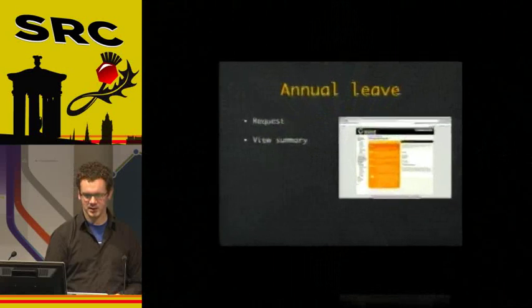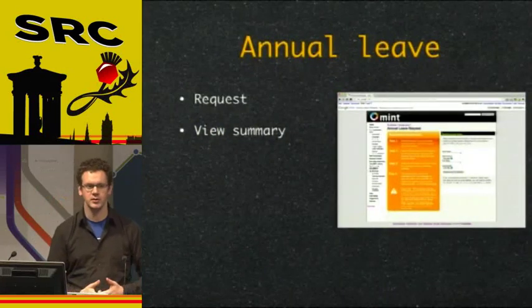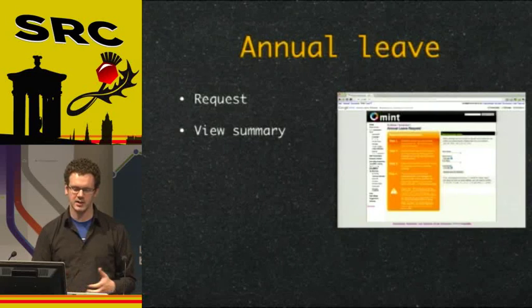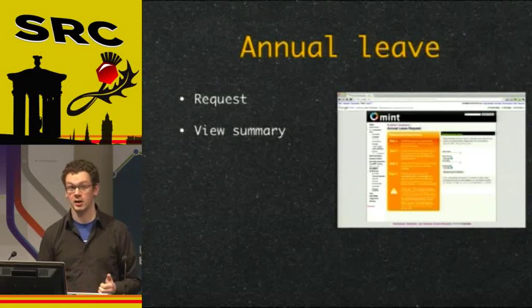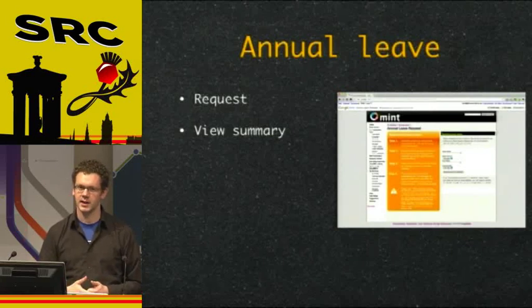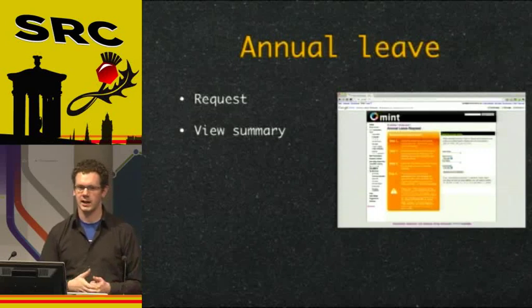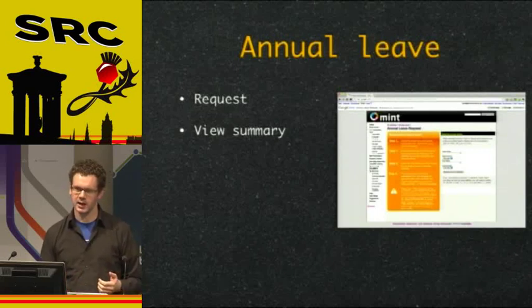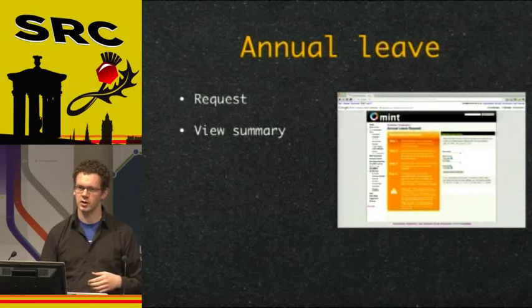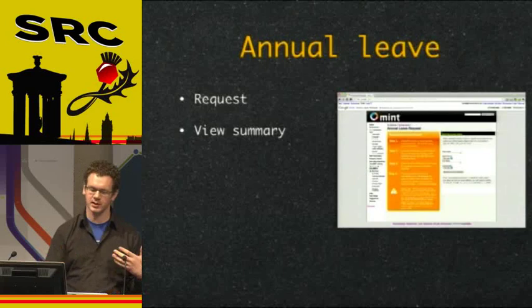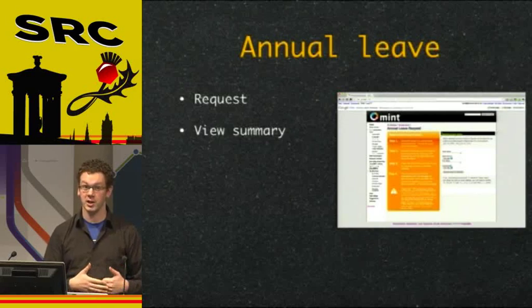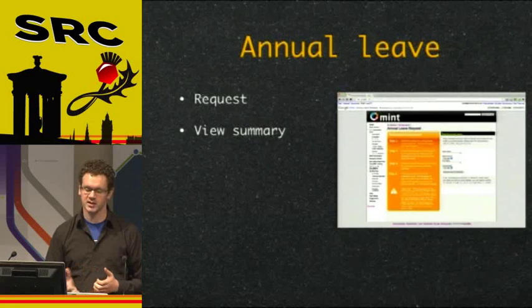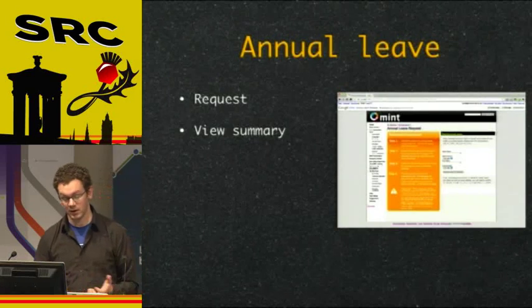We survived alpha testing and launched to a few beta users across the country. We quickly saw that annual leave was one of the most used parts of the site. Historically, employees had to pick up the phone, call HR, find out how many days they had left, ask for a certain week off, and HR would email a manager for confirmation — all taking a few days. So it's no surprise that automating this by providing all that information and the ability to request annual leave from the web page was going to be popular.